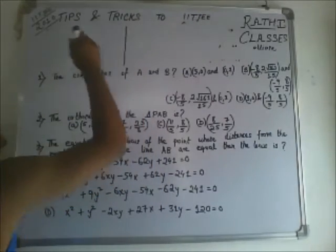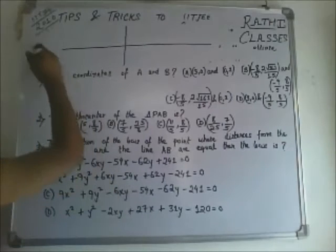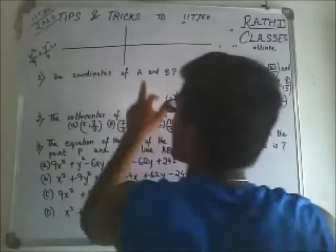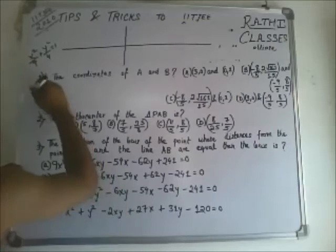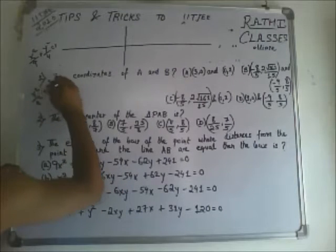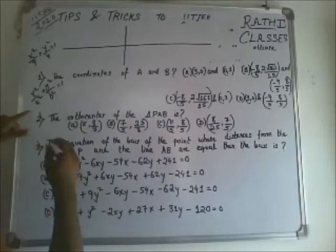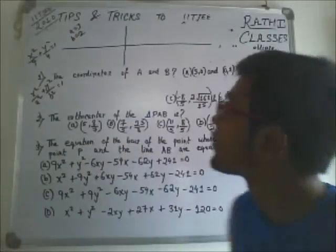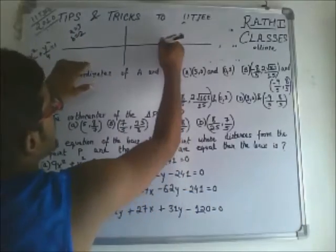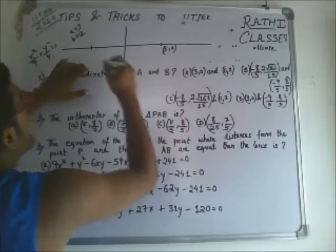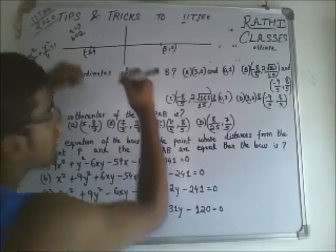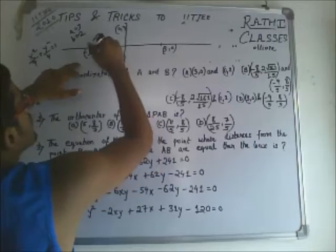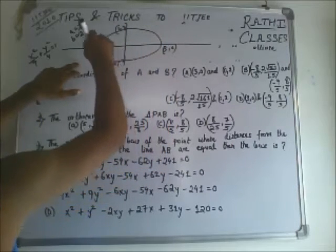There is an ellipse having equation x²/9 + y²/4 = 1. The general equation of ellipse is x²/a² + y²/b² = 1, so from here a = 3 and b = 2. The length of the major axis gives us the points (3, 0), (−3, 0), (0, 2), and (0, −2). This is the rough diagram of our required ellipse.